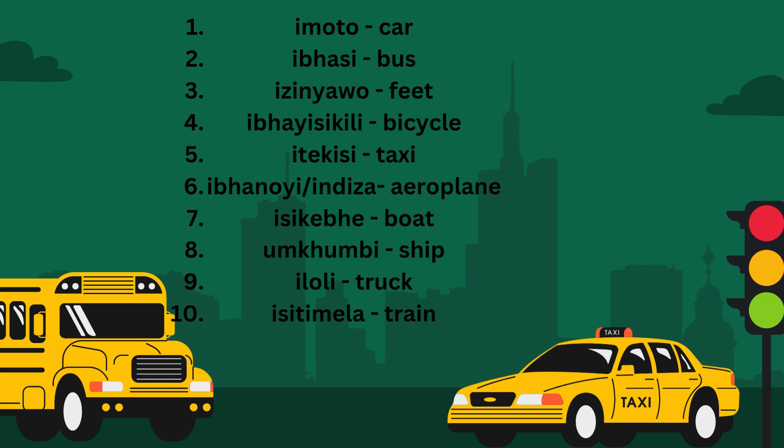Isi kebe — a boat. Umkumbi — ship. Iloli — truck. Isi timela — train.